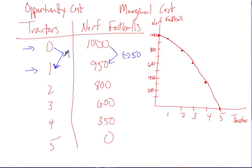This is an incremental thing. Marginal just means going incrementally: 0 to 1, 1 to 2, 2 to 3, 3 to 4, 4 to 5. That's what we mean by marginal. We'll get into the idea of total opportunity cost a little bit later in the video.